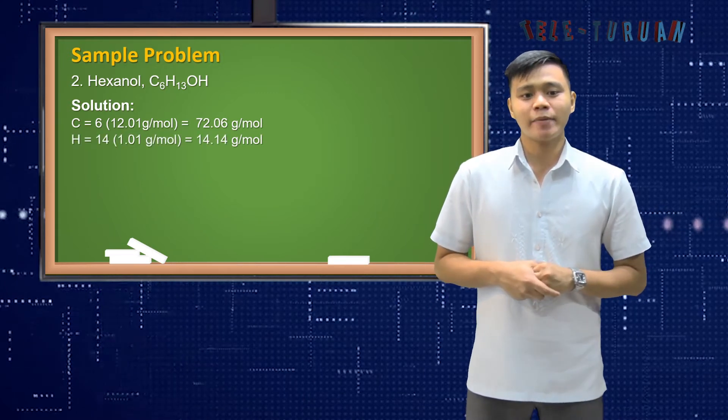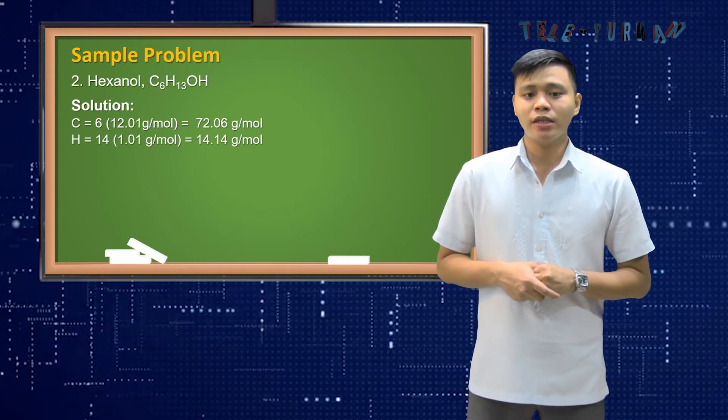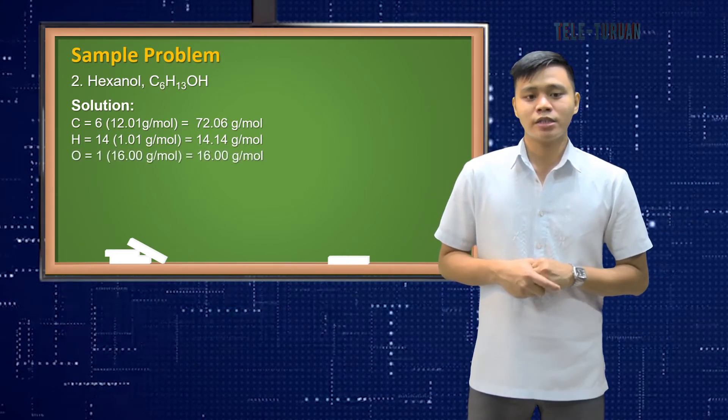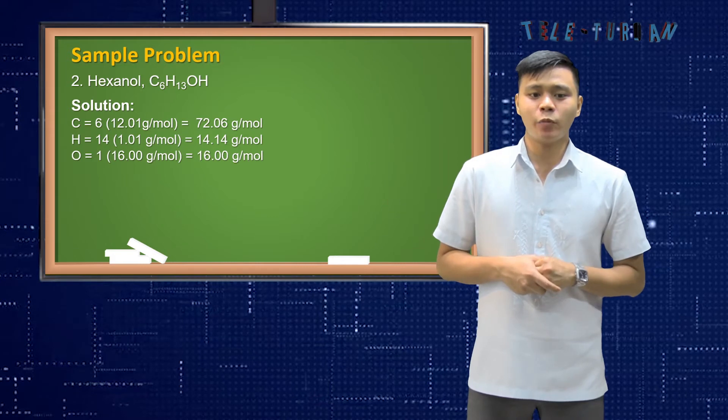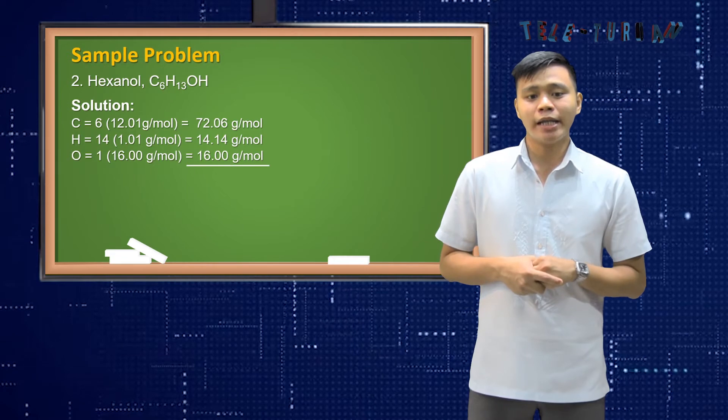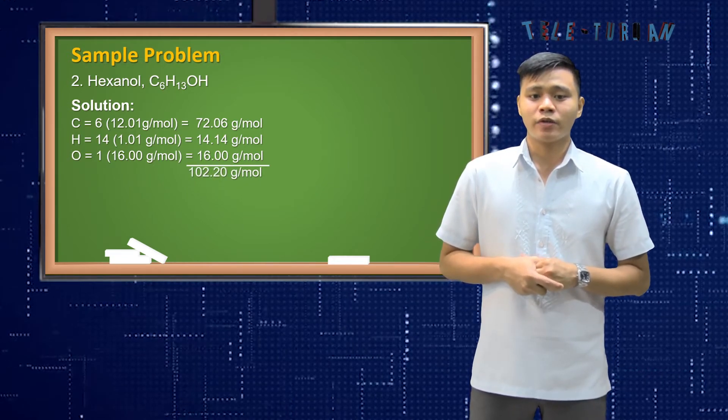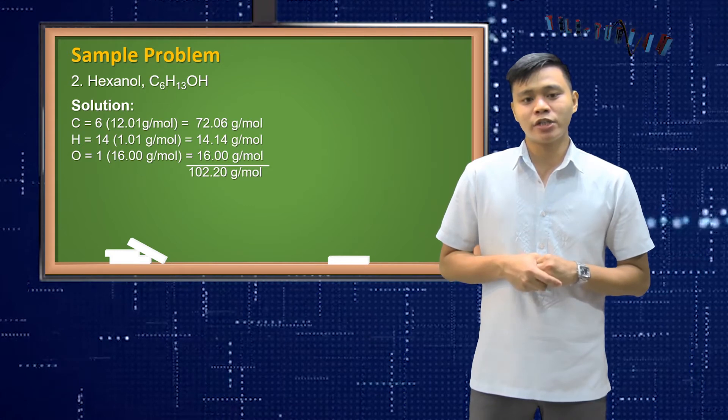Hydrogen, 14 times 1.01 grams per mole is equal to 14.14 grams per mole. Oxygen, 1 times 16.00 grams per mole is equal to 16.00 grams per mole. The total is 102.20 grams per mole. So getting the percent composition of each element,